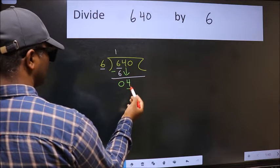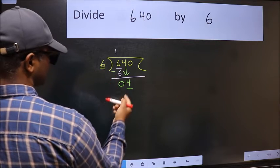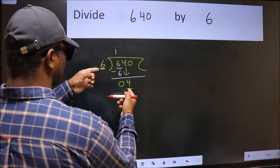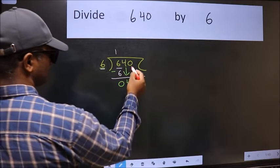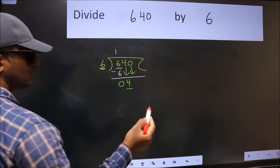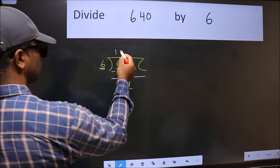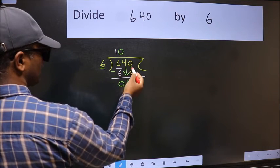Now here we have 4, and here 6. 4 is smaller than 6, so we should bring down the second number. The rule to bring down the second number is we should put zero here, then we can bring this number down.